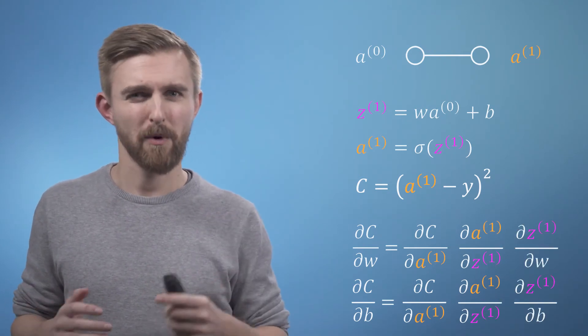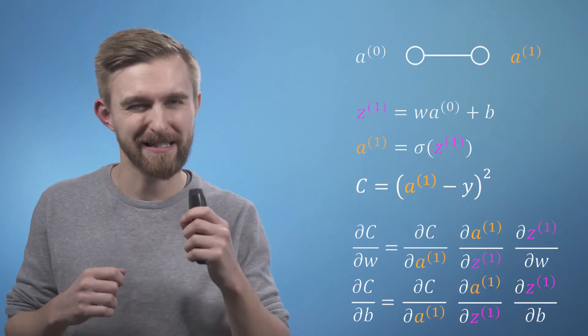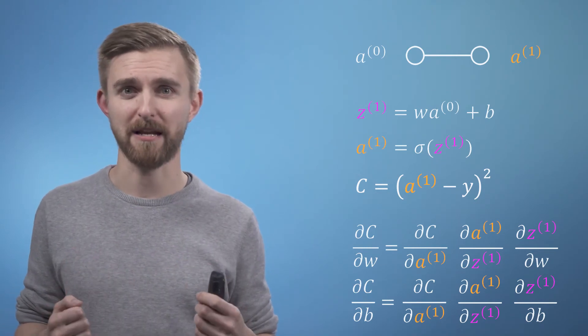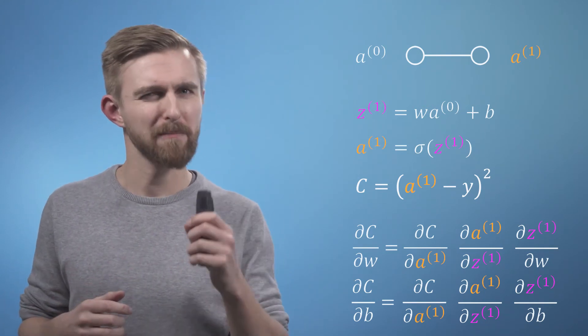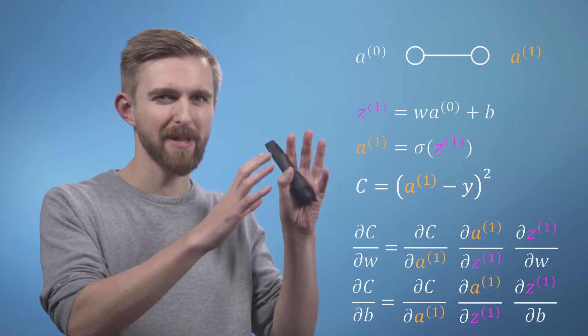So we must therefore include an additional link in our derivative chain. We now have the two chain rule expressions we'd require to navigate the two-dimensional WB space in order to minimize the cost of this simple network for a set of training examples.